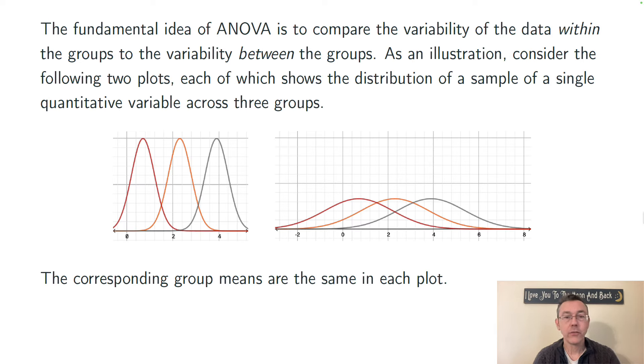Here I'm imagining two different studies. We have sample data in each case, and in each case, the sample means are the same within each group. In the first case, on the left, we have three groups with these different means. There's very little overlap of the data, and so this is going to be providing pretty decent evidence that in the larger population, the group means are going to be different.